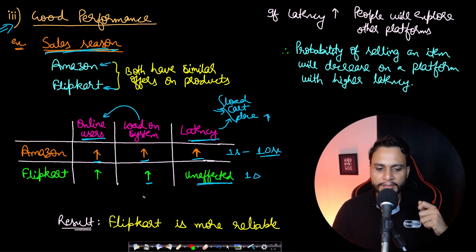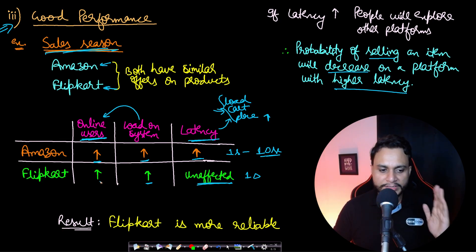What do you think will happen if the latency increases? The users will get annoyed and they will start exploring other platforms and websites. So the probability of selling an item will decrease for a platform with higher latency. You will want that more number of online users be present and keep exploring on your platform so that the probability of selling an item at your platform will be higher than other platforms. So considering this particular situation, we can say that Flipkart is more reliable because the latency is unaffected even if the load is increasing. So Flipkart is having good performance as compared to Amazon.